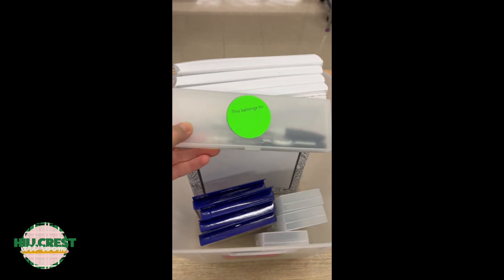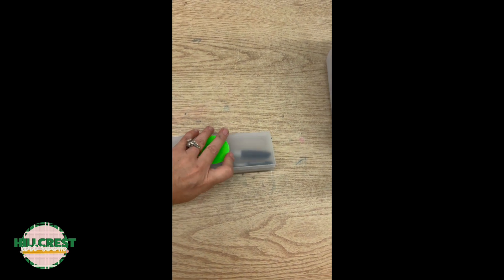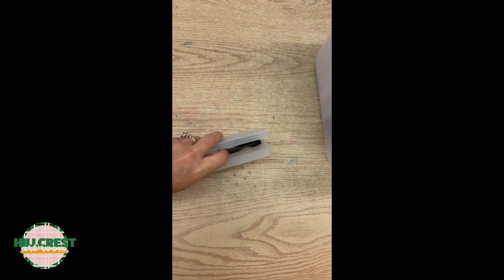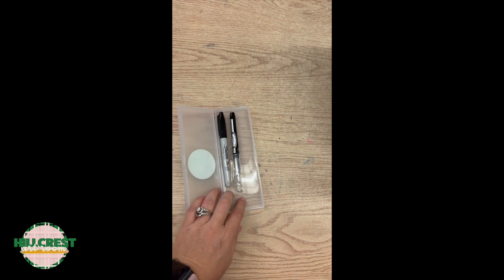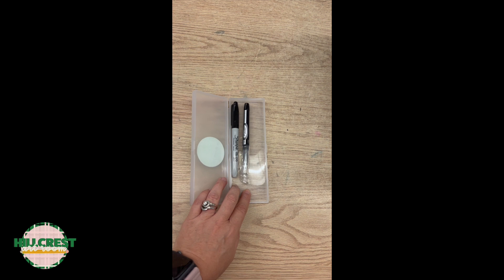Everybody has their own pencil pouch. Again, write your name on the green sticker. Fourth grade, you have two pens in here - a permanent marker and a black pen. These are yours. Please take care of them. You don't get another set of pens.